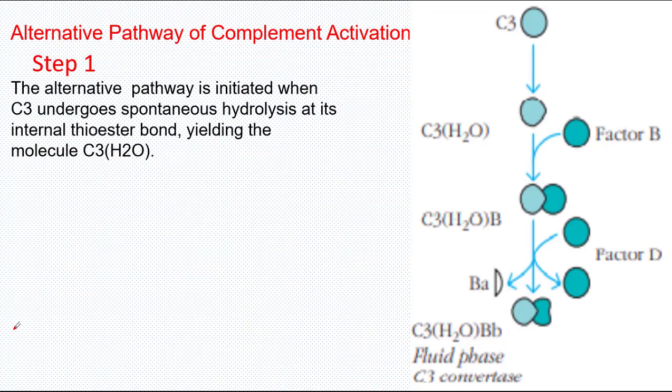Alternative Pathway of the Complement System, just like the Lectin pathway, is considered part of the innate immune system because it does not require antibodies to recognize the pathogen. It uses its own set of C3 and C5 convertase, which are unique to it.